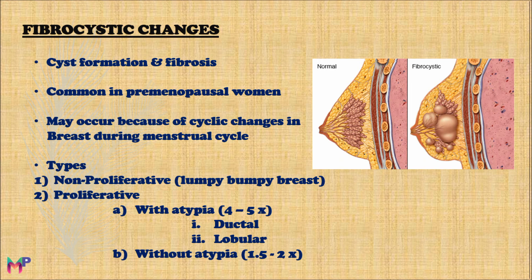In the non-proliferative type, there occurs apocrine metaplasia of the epithelial cells in the breast. In the proliferative type without atypia, there is epithelial hyperplasia appearing as double layers of epithelial cells. In the proliferative type with atypia, atypical clonal cells appear and divide, increasing the risk of carcinoma development. We will now focus on the non-proliferative type; the proliferative types will be discussed in a separate lecture.